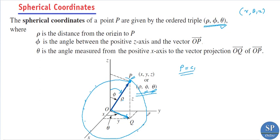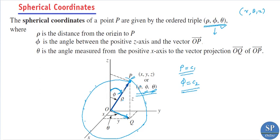It is a sphere with radius c1. Now, φ equal to a constant c2 means θ can take values from 0 to 2π and ρ can also vary. So we will get a cone.